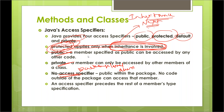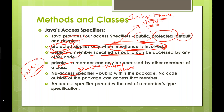Public means when a member is specified as public, it can be accessed by any other code — any Java code. Whenever we mention a member as public, that member can be accessed by any code outside of a particular class.